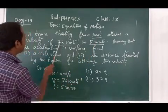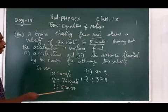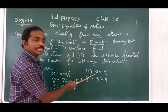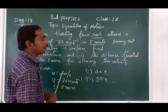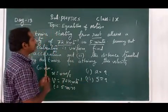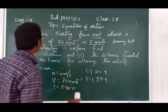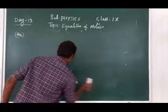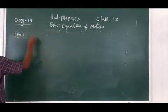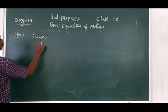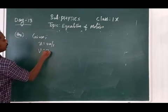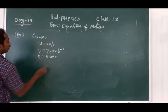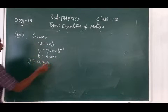The train starts from rest so initial velocity is zero. We have final velocity v equals 72 km per hour, and time is 5 minutes. We are asked to find acceleration — since velocity changes there is acceleration — and distance traveled. I hope everybody understands. Now I am going to clean the board and begin solving.